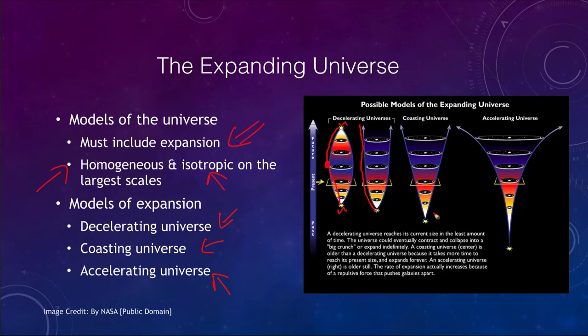A coasting universe is what we consider with a constant value for Hubble's constant. If Hubble's constant does not change, then the universe has always been expanding at the same rate and would continue to do so.